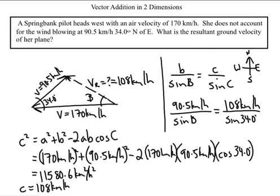And when I do that, I just cross multiply and then divide by 108 kilometers per hour, and then go second function sine. And I find my angle b to equal 28.1 degrees.